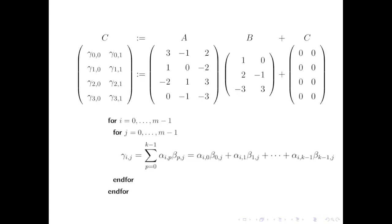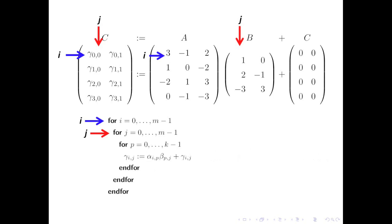Let's look at a concrete example where we're computing a 4 by 2 matrix C, and we're going to update it by doing A times B with matrices with the indicated entries. The loop for computing this is given below. If we concentrate on the loop index i, we can march across the i-th row one element at a time, and for each entry in that row we perform a dot product, which is done by the loop index P.